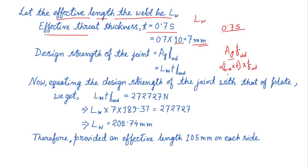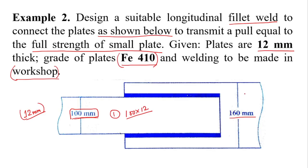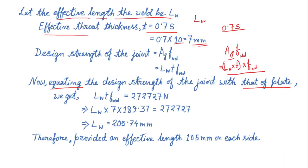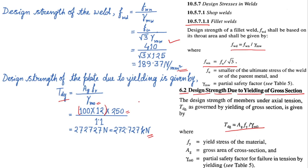Next, now equating the design strength of the joint with that of plate. As in the question it is mentioned that we have to design a suitable longitudinal fillet weld so that it can bear the pull equal to the full strength of small plate. So the strength of the joint should be equal to the design strength of the plate.